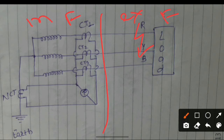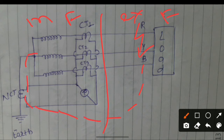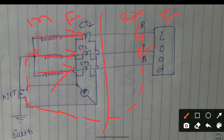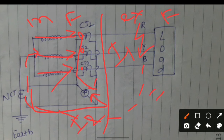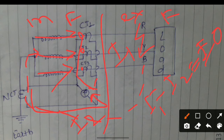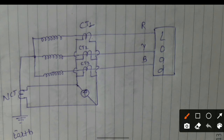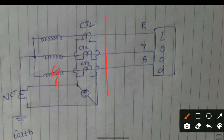Now, with an external fault, the fault current flows through the NCT and to the neutral. The same fault current flows through all the windings. Due to the polarity of the CTs, CT current flows one way and the NCT current flows the other way. Let's say this is I1 and this is I2, so I1 minus I2 equals zero. The relay will not get effect from this external fault and will not operate.